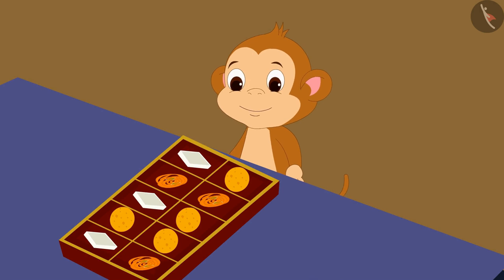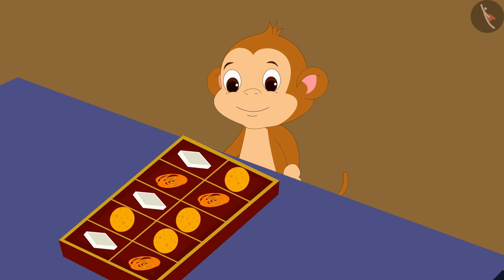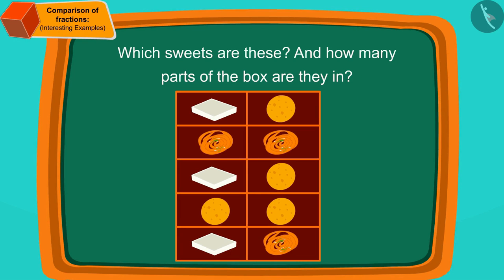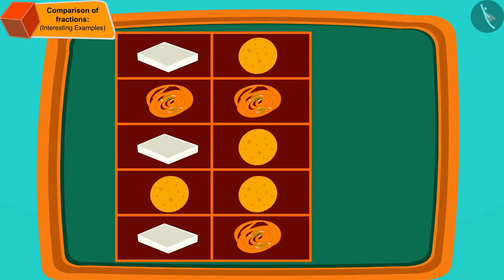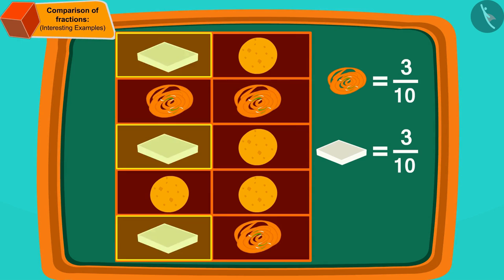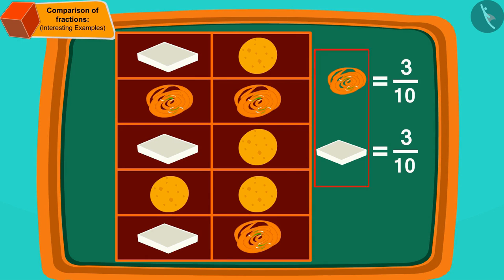When Babban looked at the box of sweets, he saw that there are two sweets filled in equal parts of the box. Can you tell which sweets these are and how many parts of the box they are in? Well done, children — you found the answer correctly! Both jalebi and kaju katli are in three-tenth parts of the box.